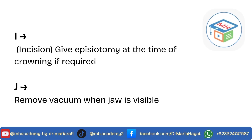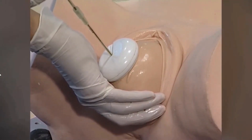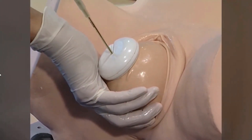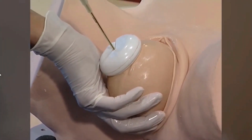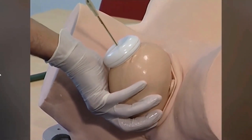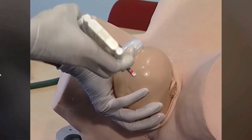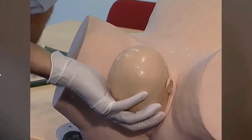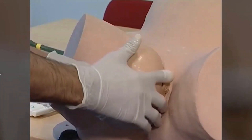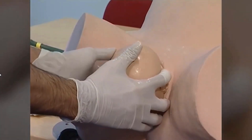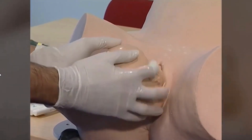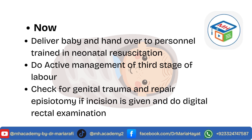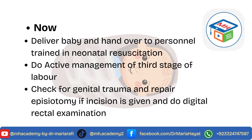I for incision — give an episiotomy at the time of crowning if required. J for jaw — remove the vacuum when the jaw is visible. Deliver the baby and hand over to personnel trained in neonatal resuscitation. Do active management of the third stage of labour, check for genital trauma, repair the episiotomy if given, and do a digital rectal examination.